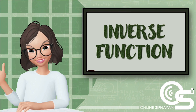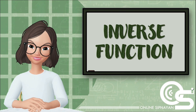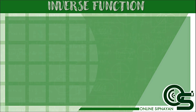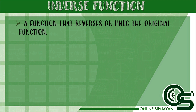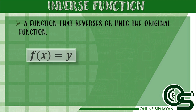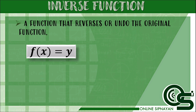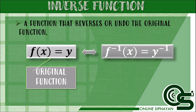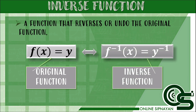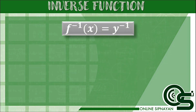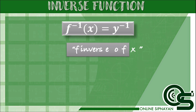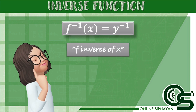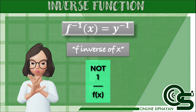Good day, students! For today's video, our topic will be all about inverse function. Let us define first inverse function. It is a function that reverses or undoes the original function. If f represents a function with an element of x to y, then its inverse function is denoted by f inverse with an element of y back to x. The notation for inverse function is read as f inverse of x. You have to remember that it does not mean 1 over f of x.